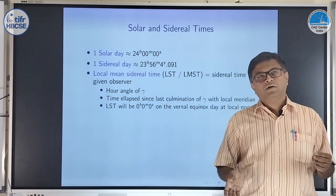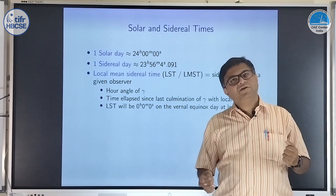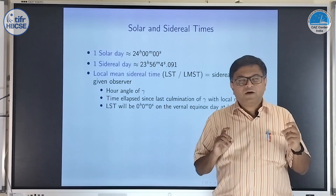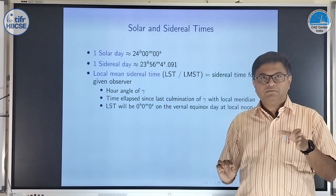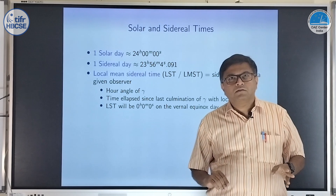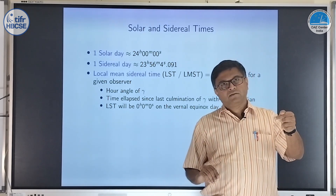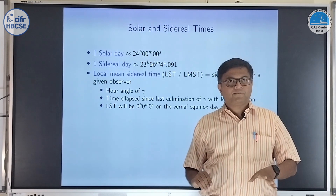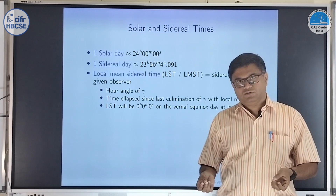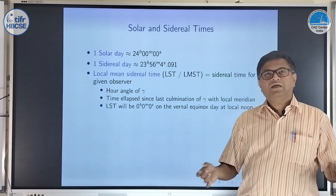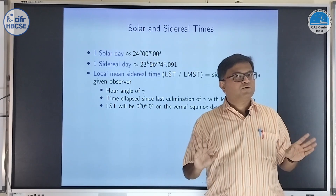By that definition, whenever the vernal equinox is on your meridian, LST will be zero. Now, on vernal equinox day, the vernal equinox point is almost exactly at the sun. So when the sun is at the meridian, the vernal equinox will also be at the meridian. Which means on vernal equinox day at local noon, when the sun is at the meridian, LST is going to be zero — a convenient number.